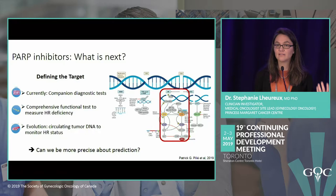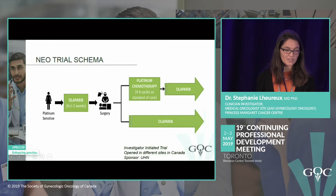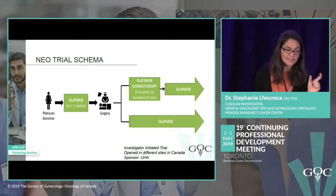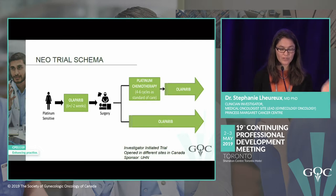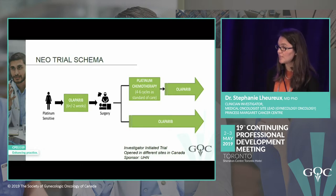The NEO trial is currently open at different sites in Canada, addressing this question. Patients with platinum-sensitive high-grade serous recurrence eligible for secondary debulking surgery will receive olaparib for 6 to 8 weeks. They have a biopsy before surgery, then are randomized between chemotherapy plus olaparib maintenance, or olaparib alone with no chemotherapy. Biopsy and ctDNA are collected to better predict who will respond to olaparib beyond the BRCA population.